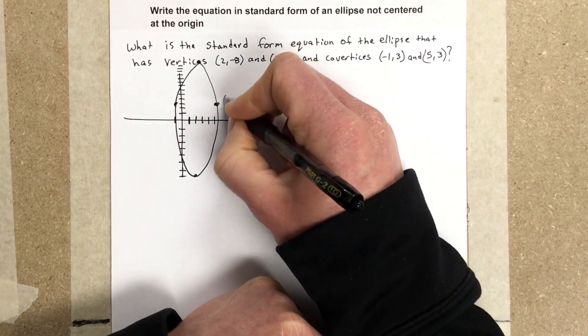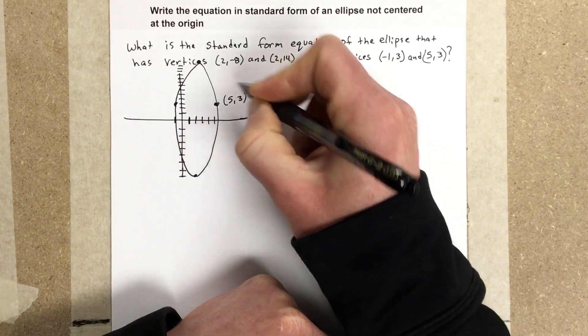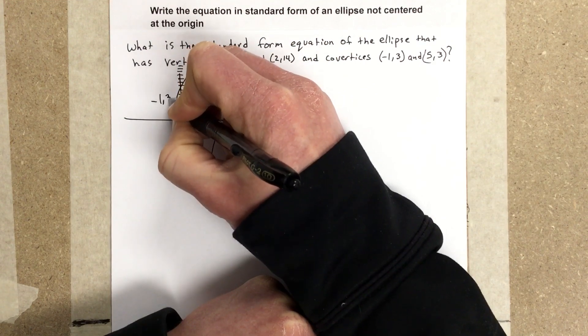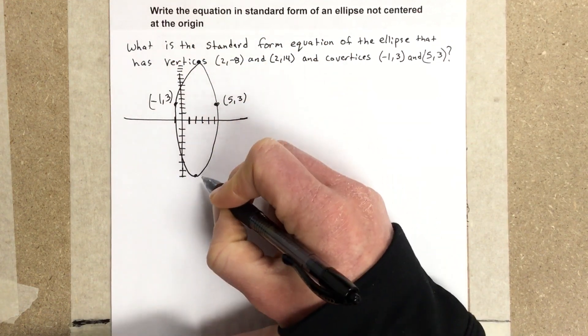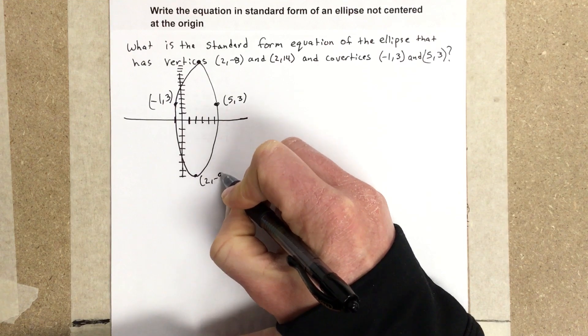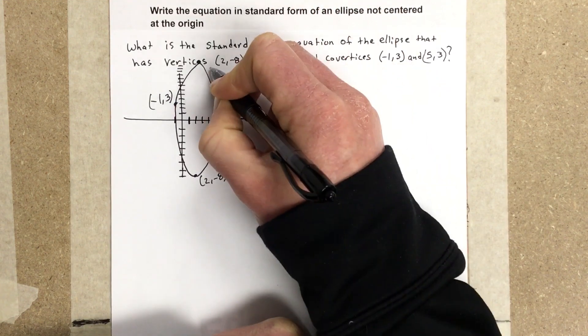So I've got (5, 3) here, I've got (-1, 3) here. I have (2, -8) and (2, 14).